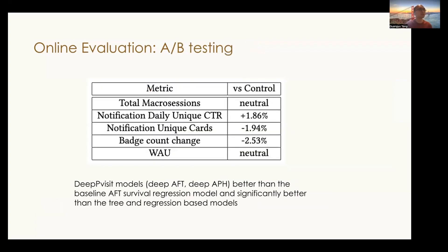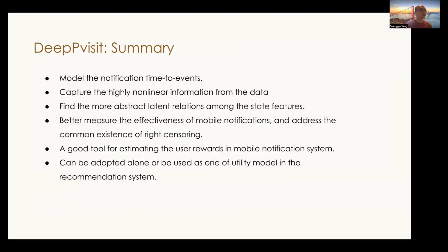For online evaluation, we use standard A/B testing. We replace the relevance utility model with the DeepPeVisit model in LinkedIn's notification decision-making model bundle. We were able to reduce the notification volume sent to users by about 2%, improving the click-through rate by more than 1.8%, and keeping the key business metrics — macro session and WAU — neutral.